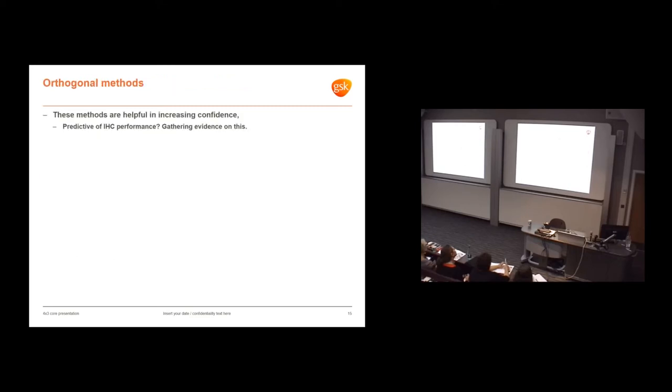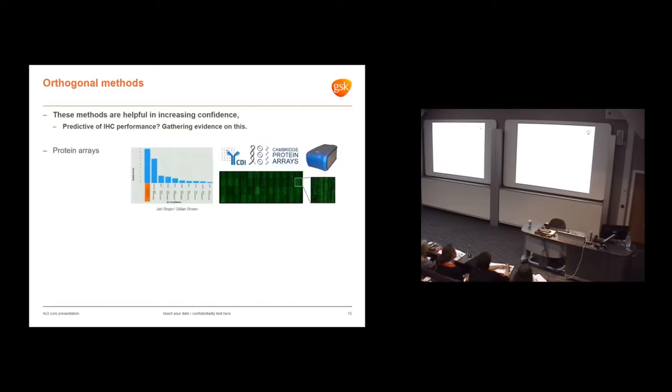We're also using orthogonal methods. At the moment, we find they're helpful in increasing confidence. We're still building up data on whether they're predictive of performance in IHC. We're using protein arrays from CDI Cambridge protein arrays. In this assay, we've seen quite varied performance - some beautifully monospecific antibodies and some that cross-react to everything.